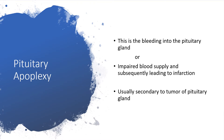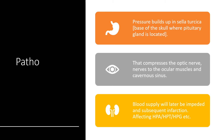Pituitary apoplexy is the bleeding into the pituitary gland or impaired blood supply to the pituitary gland, subsequently leading to infarction of the pituitary gland. Usually it is secondary to a tumor of the pituitary gland itself. The brief summary of pathophysiology is that there's pressure that builds up in the sella turcica, which is at the base of the skull and that is where the pituitary gland is housed.